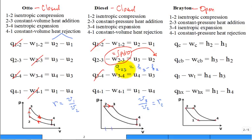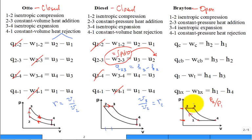For the Brayton cycle, from 1 to 2 the flow goes through the compressor, going from low pressure to high pressure. The pressure ratio is P_final over P_initial. From 2 to 3, it flows through the combustor at constant pressure. From 3 to 4, it flows through the turbine. And from 4 back to 1, it passes through a constant pressure heat exchanger to close the loop.